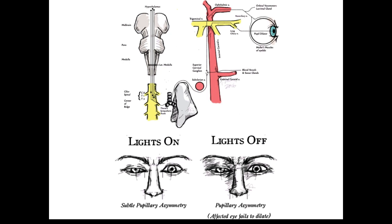This patient has a right Horner's syndrome — notice the pupil is smaller because we've lost the sympathetic supply that dilates the pupil. There is also a droopy eyelid, called ptosis (the P is silent), due to loss of supply to Müller's muscle. If you dim the room lights, normally both pupils get bigger; but because the sympathetic supply is knocked out, this pupil doesn't dilate — so dimming the room lights can make the pupil asymmetry very dramatic.